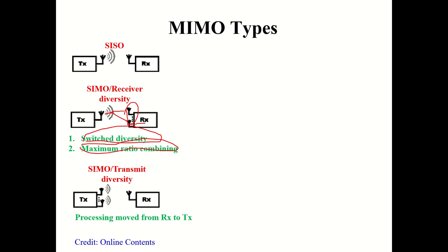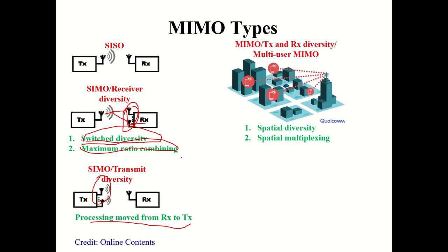MISO (Multiple Input Single Output) is similar to SIMO except the processing moves from the receiver to the transmitter. Both SIMO and MISO are structurally similar but differ in where the processing occurs. Next is multi-user MIMO, where at a time four or eight devices can be served based on the MIMO configuration — for example, 4x4 MIMO can serve four devices simultaneously, ensuring both spatial diversity and spatial multiplexing.